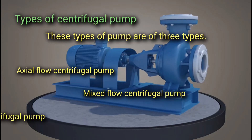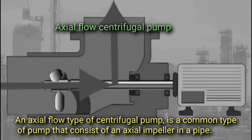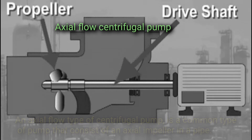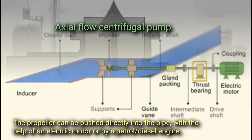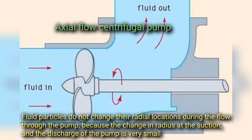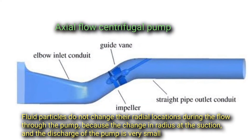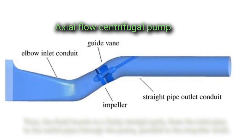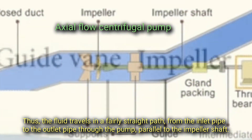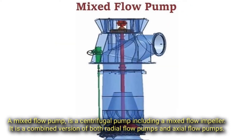Centrifugal pumps are of three types: axial flow, mixed flow, and peripheral centrifugal pump. An axial flow centrifugal pump consists of an axial impeller in a pipe. The propeller can be driven directly by an electric motor or a petrol/diesel engine. Fluid particles do not change their radial locations during flow through the pump because the change in radius between suction and discharge is very small. Thus, the fluid travels in a fairly straight path from the inlet to the outlet, parallel to the impeller shaft.